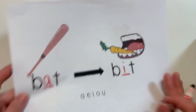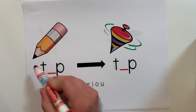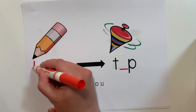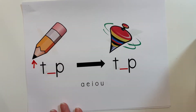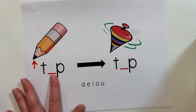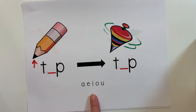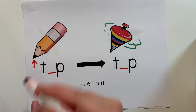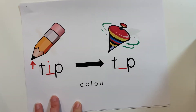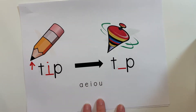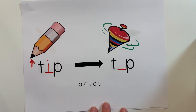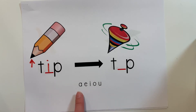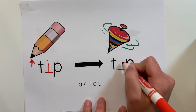This one is the tip of the pencil — T-I-P. What is that middle sound? Which vowel sound is in the middle? IH. I want to change that to top — T-O-P. Which vowel makes the AH sound? O — ah.